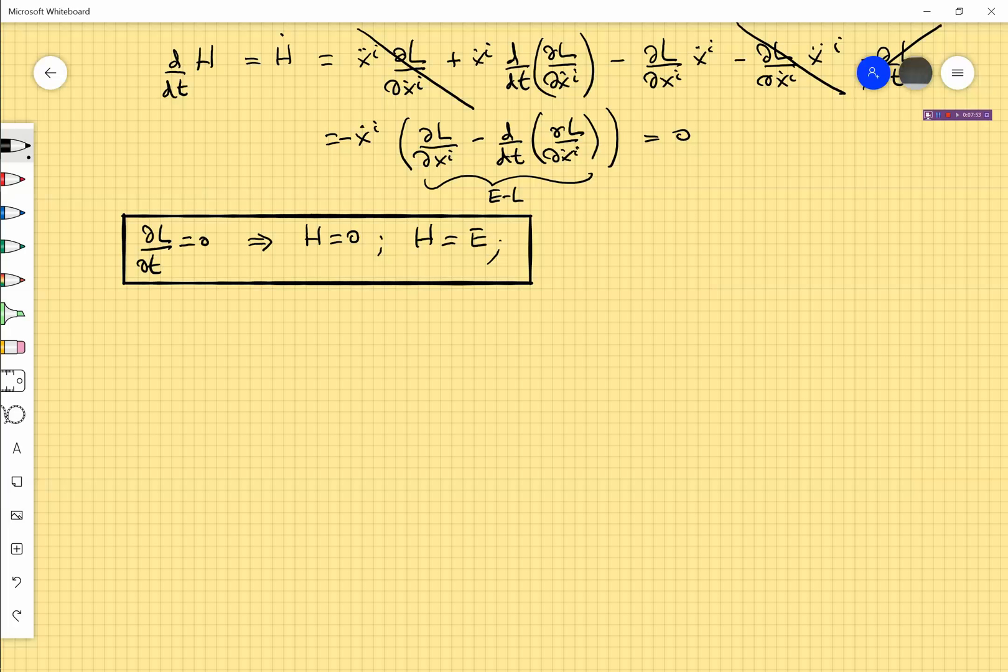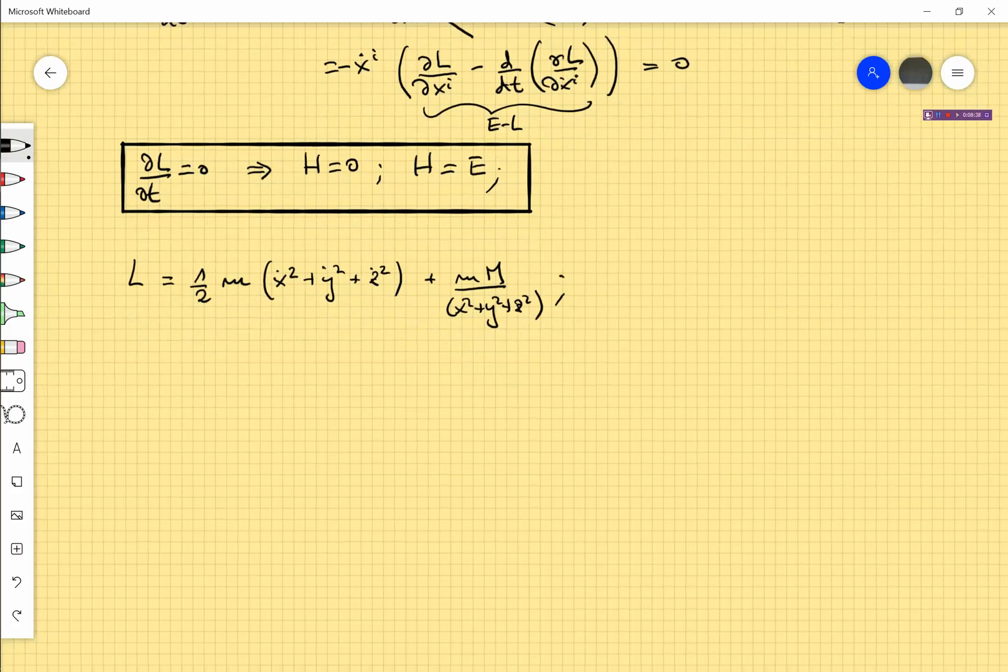One very well-known example is that of a particle, a massive particle, moving in a gravitational potential. The gravitational potential up to the gravitational constant is the product of the masses, divided by x squared plus y squared plus z squared. I remind you that the gravitational potential is negative, so here this minus V is a positive quantity.